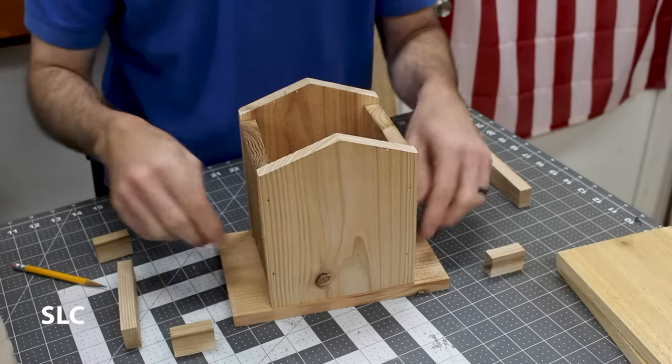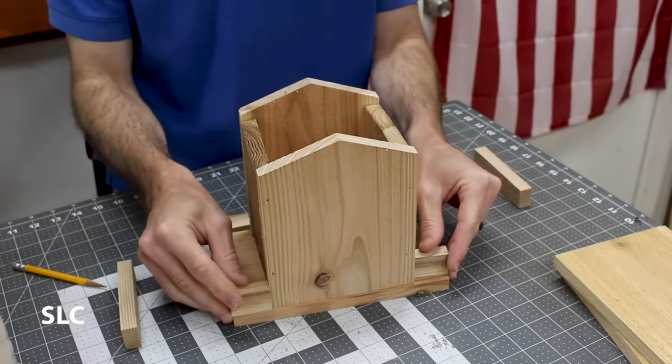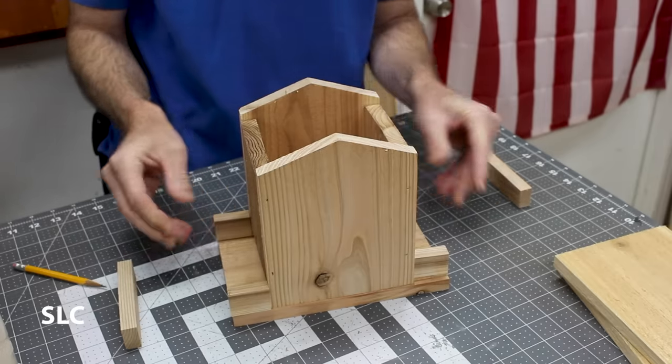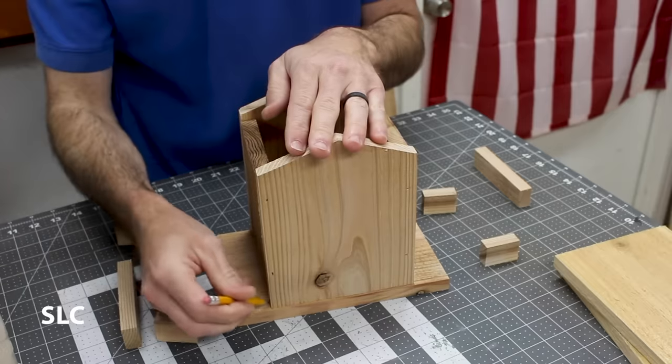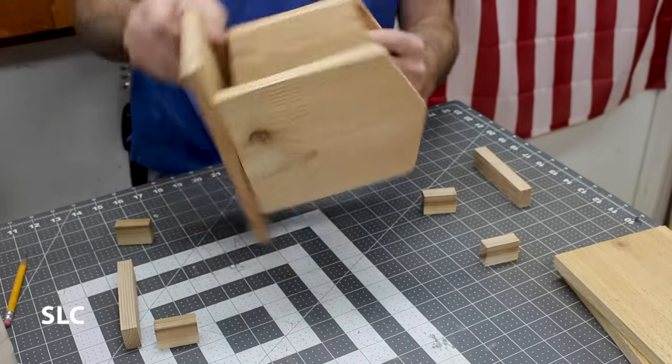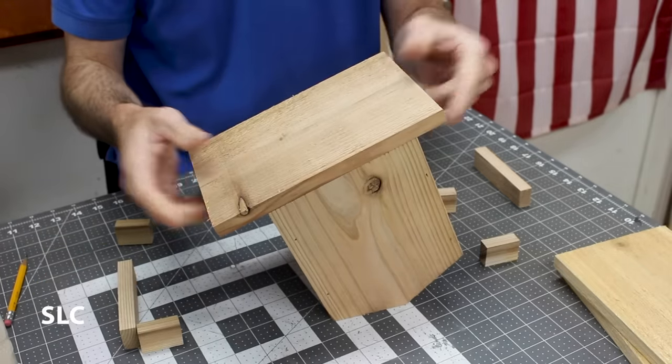Now we want to attach this main section to the base. By doing that, we're going to line it up using these outer pieces. You want to get them roughly centered. They don't have to be exactly perfect, but close enough. Then take a pencil and we want to just mark off the sides here so we know where those are going to be. And we can flip this thing upside down, put some glue on there, and attach it with some brad nails.